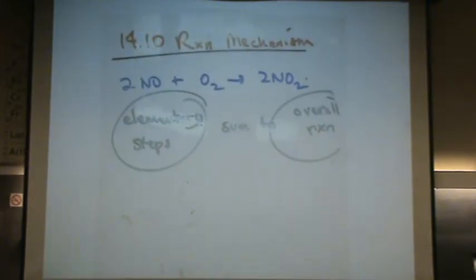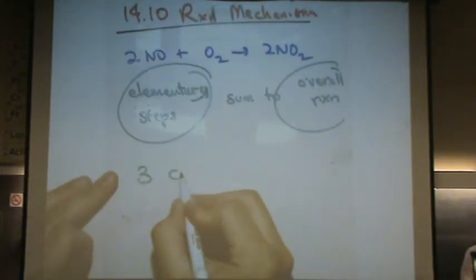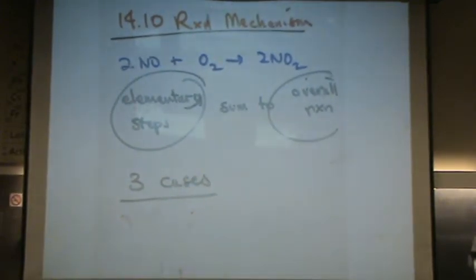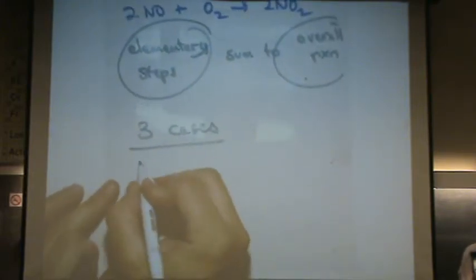So there's going to turn out to be three cases of types of reaction mechanism problems. Three cases. They are all related to the rate determining step. Which one is the slow one? Again, the rate determining step is the slow step.